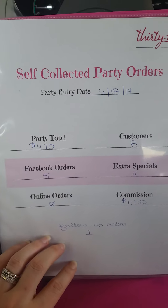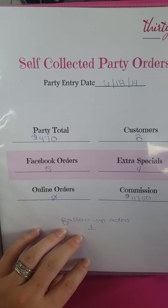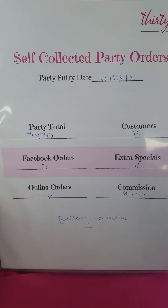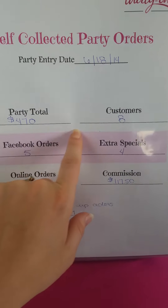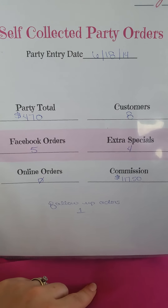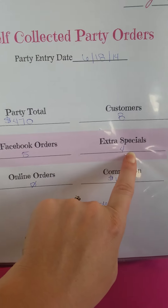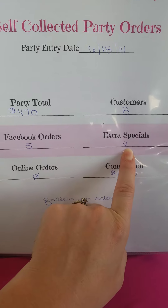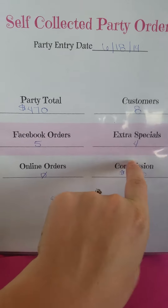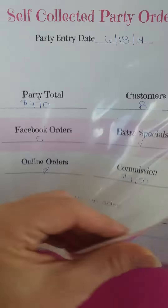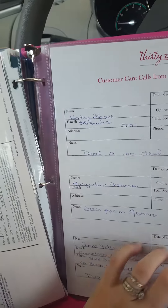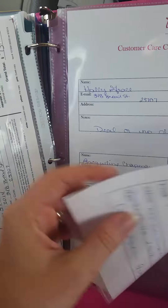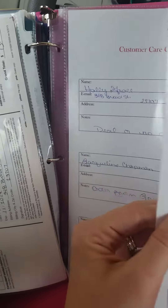These are for parties or orders where I've collected enough orders to actually put together a party. It helps me keep track of where I got the orders from. I always sell my extra specials when I collect orders like this, so I want to track that too. All of those order forms go back here, and even though they weren't at a party they still need follow-up, so I go ahead and fill those out and put them back here.